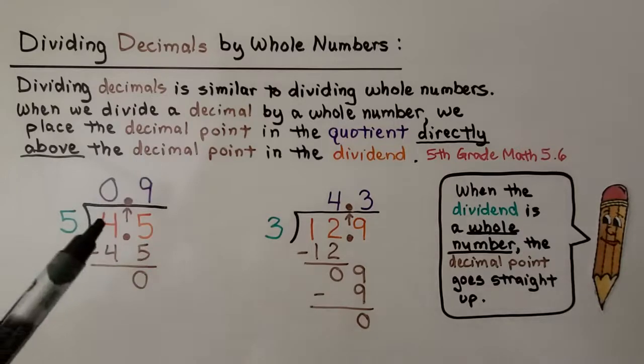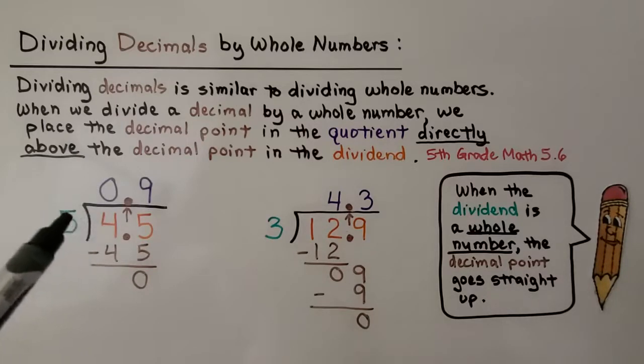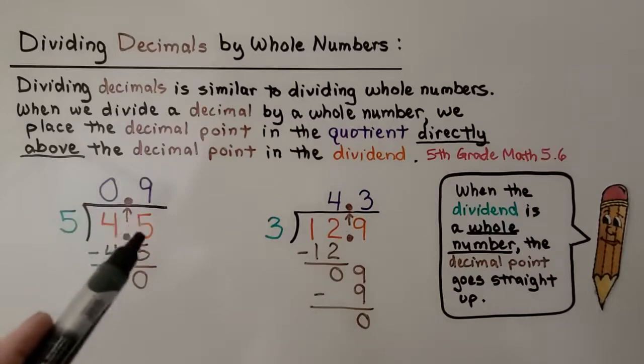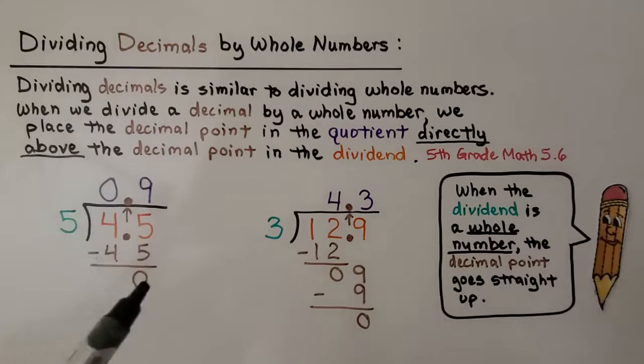We have 4 and 5 tenths divided by 5. We do this just like regular long division. 5 can't fit into 4, so we put a 0 there. 5 fits into 45 nine times because 9 times 5 is 45. We subtract the 45 and get a 0. Our answer is 9 tenths.